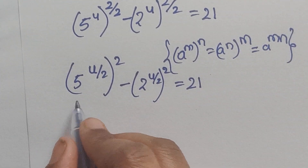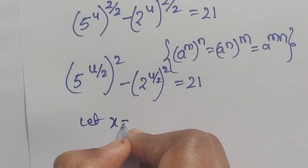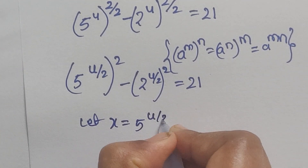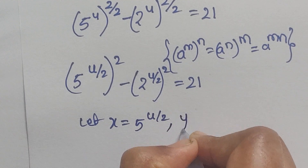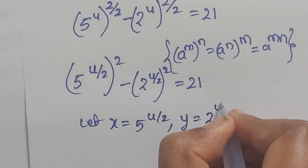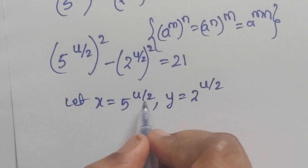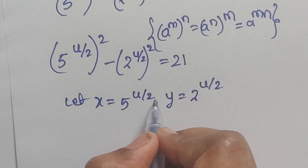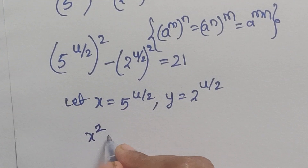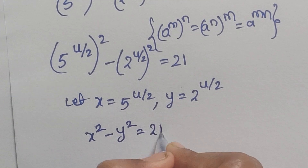Now let us consider x equal to 5 to the power of u/2, and y equal to 2 to the power of u/2. In place of those terms we write x and y, so it becomes x squared minus y squared equals 21.